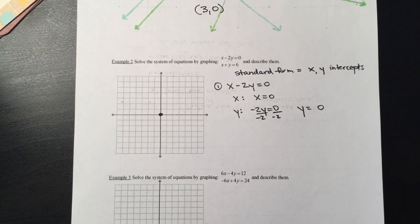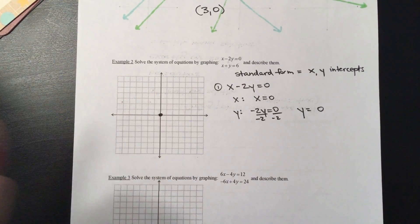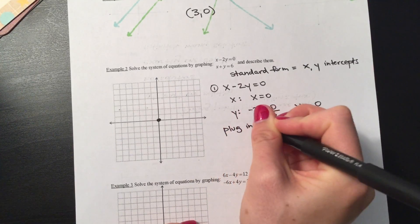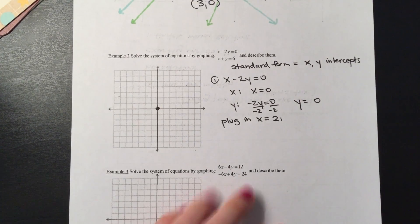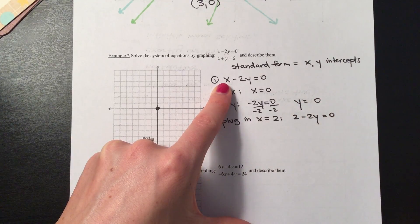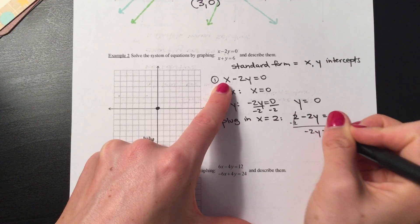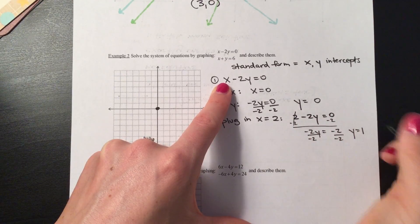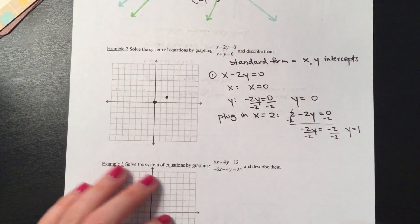Since both intercepts are at the origin, I only have a single point, so we want to get at least one more. Plug in anything you want — let's plug in x equals 2. So 2 minus 2y equals zero. Subtract the 2 from both sides: negative 2y equals negative 2. Divide by negative 2, so y equals 1. When x equals 2, y equals 1 — so (2, 1) is another point to plot.